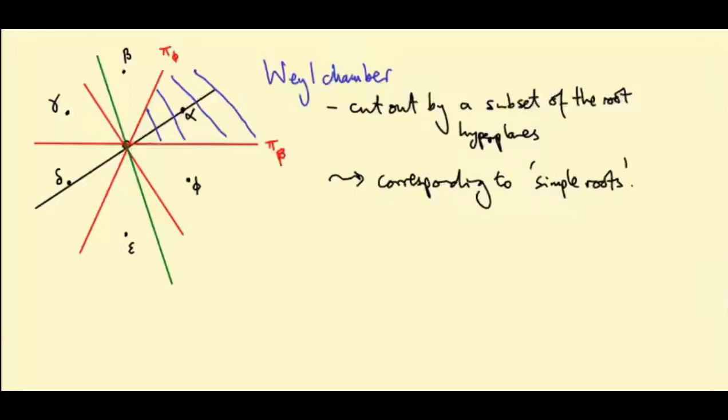A different choice of line or hyperplane of irrational slope would give us a different set of simple roots, but we'll assume we fixed such a choice.